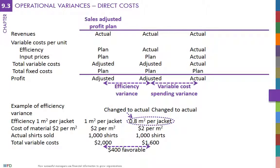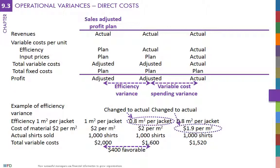For example, the planned price of fabrics may be 2 euros per square meter, and the actual price is 1.90 euros per square meter. The lower price of inputs leads to lower costs of fabrics, higher profits, and a favorable spending variance for fabrics.